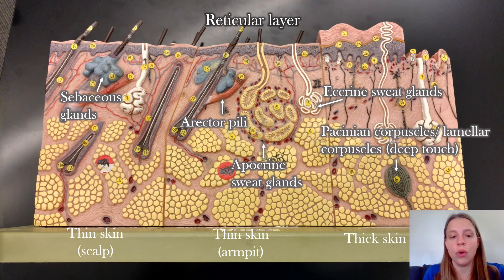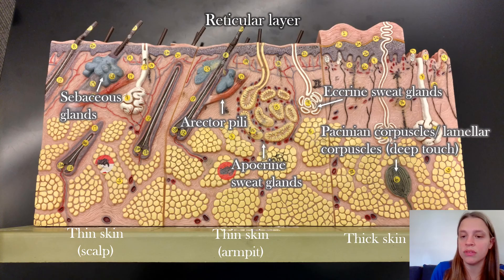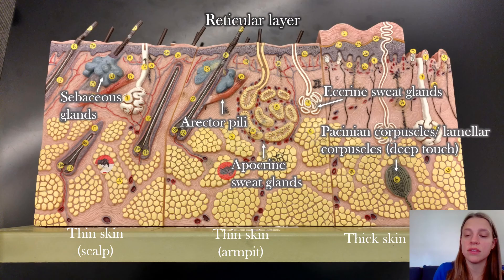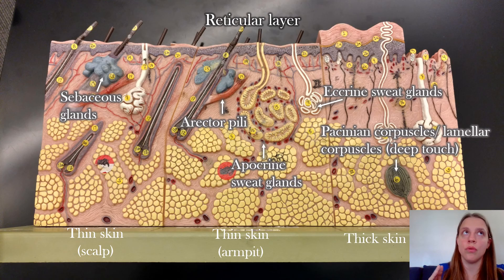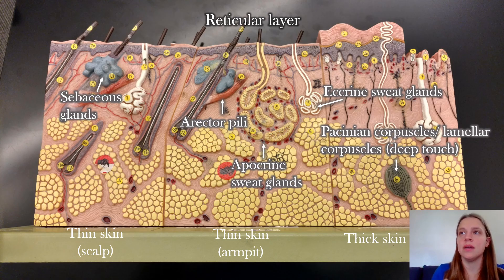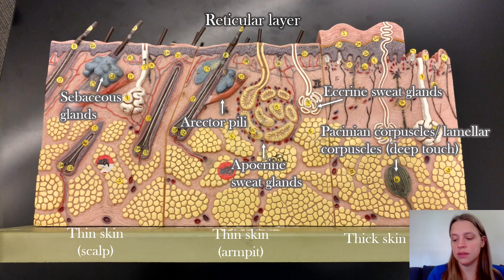On this model, lamellar corpuscles are indicated within the hypodermis, but they can also be found in the deeper layers of the dermis. Lamellar corpuscles are responsible for the sensation of deep touch — they only receive pressure and do not allow you to feel if something is hot, cold, or soft, just that pressure is being applied to the area.